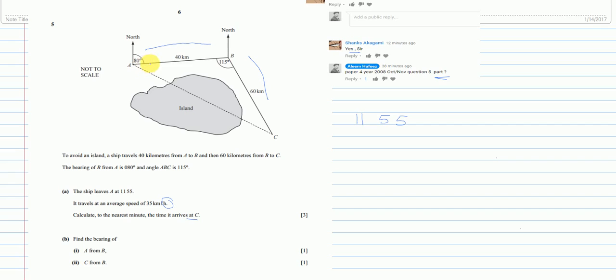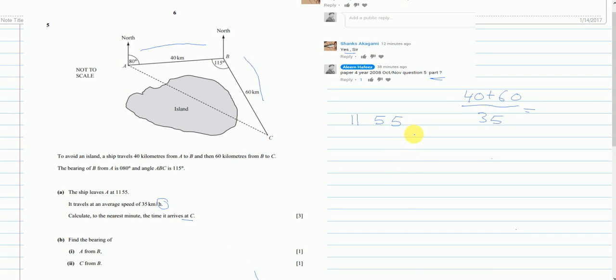We have to calculate the time it took from here, all the journey, till C. First of all, to find the time, the formula is total distance divided by speed. So the total distance was 40 plus 60 over speed, which is 35.